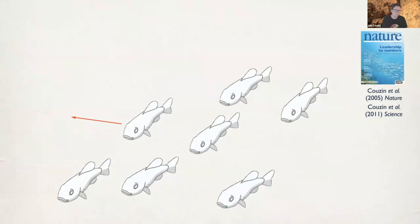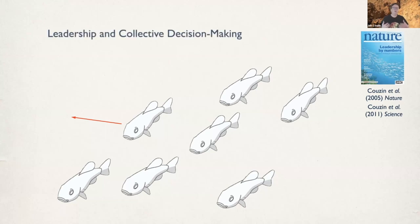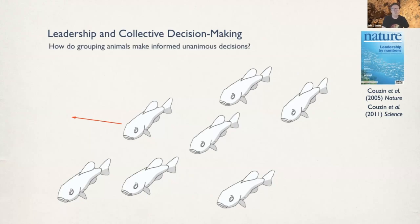I'm going to show some older work now to set the scene for work we're now doing to understand the brain. We were interested in leadership and decision making — we can think of very broad types of groups, these models are very generic and universal. We're interested in how grouping animals make informed unanimous decisions regarding where to go.